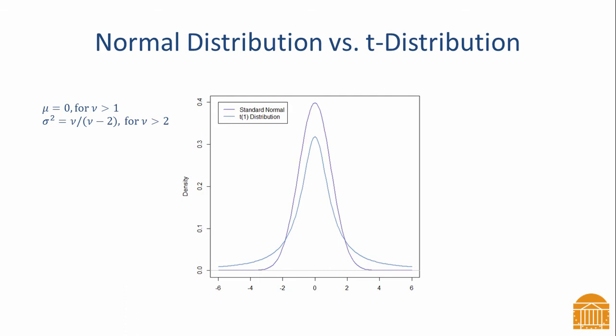Like the standard normal distribution, it is a symmetric and unimodal distribution. However, it differs from a standard normal distribution in important ways. The t-distribution has a lower peak than the standard normal distribution, and it also has heavier tails than the standard normal distribution.